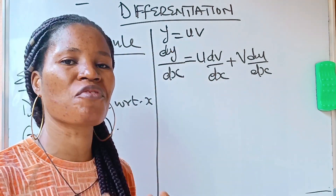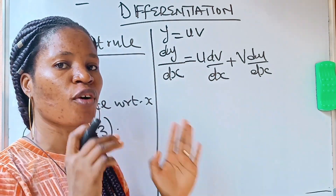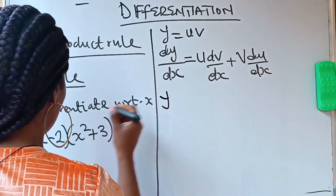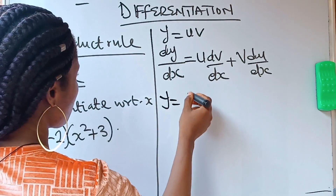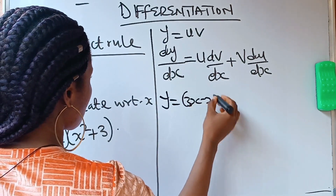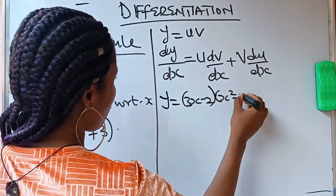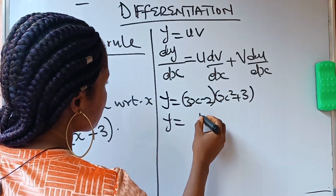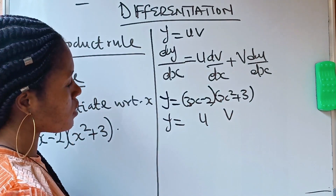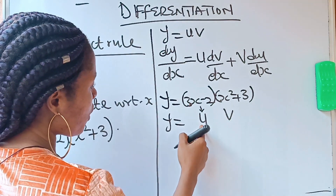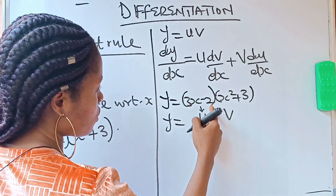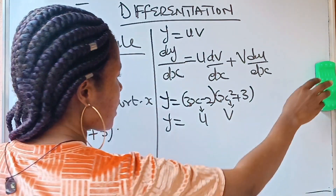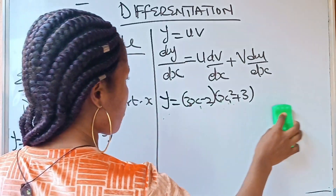How do we know our u? How do we know our v? How do we even go about it? Follow me. The equation says y is equal to 3x minus 2 into x squared plus 3. Relating this to y equals uv, it means that our u is equal to 3x minus 2, while our v is equal to x squared plus 3. That is the first thing to keep in mind.